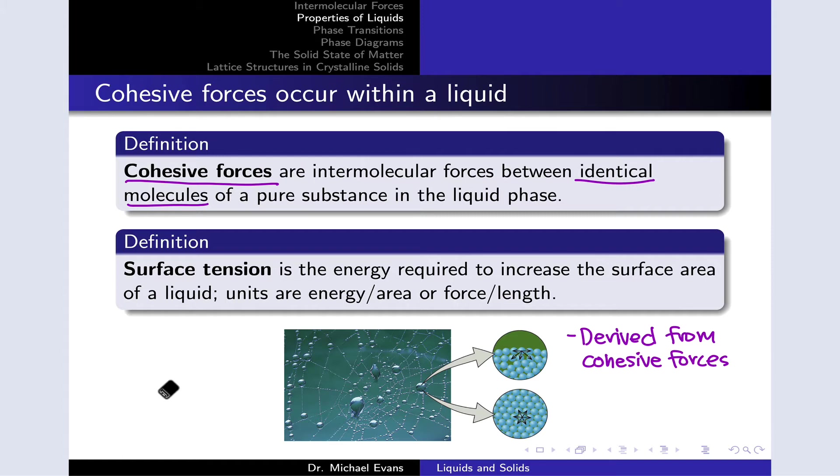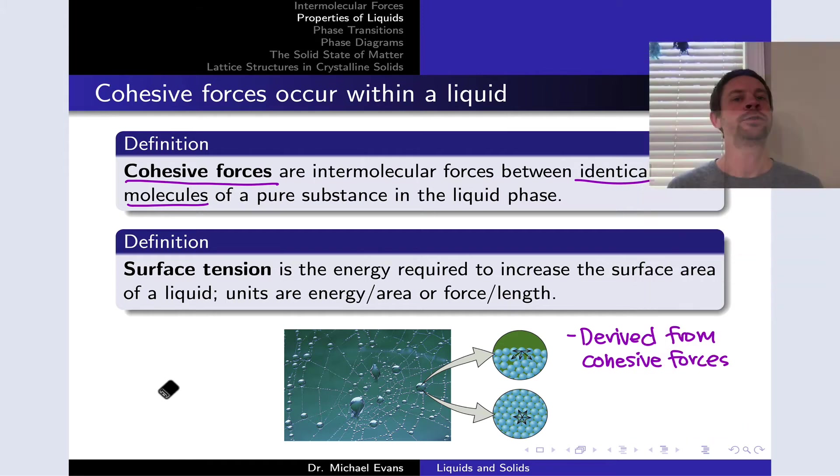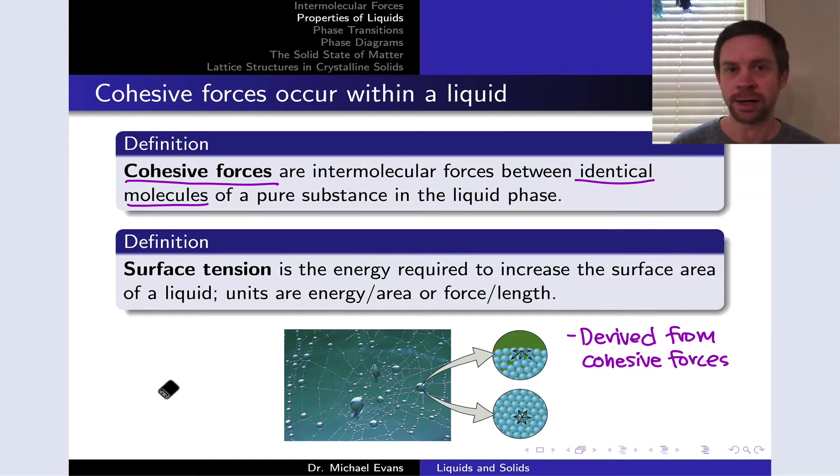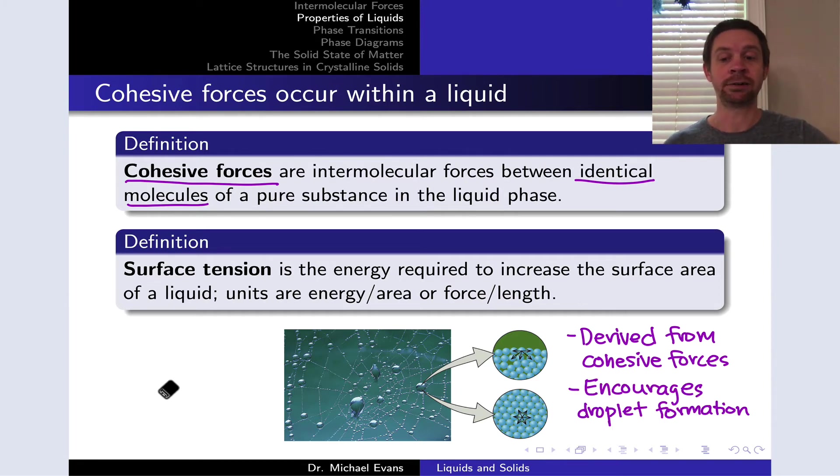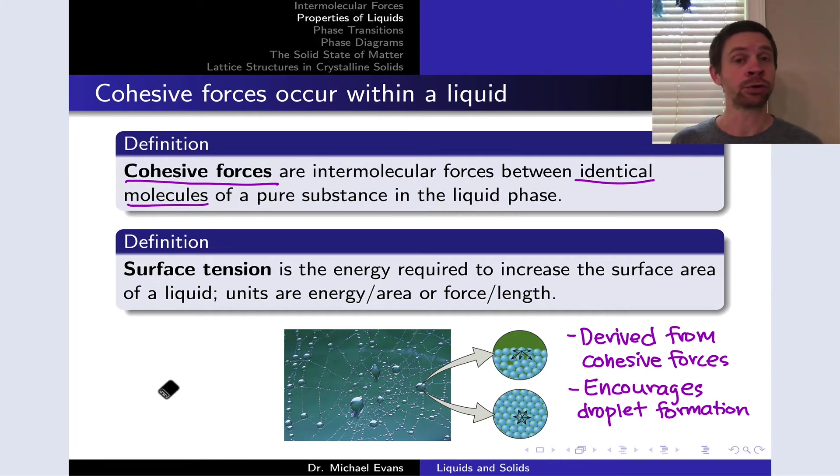Surface tension, when it's greater, tends to cause the surface to want to minimize its area, right? Because high surface tension means I've got to put a lot of energy into the liquid in order to expand or enlarge the surface. With that high surface tension, the liquid will tend to want to minimize its energy by minimizing the surface area, and this encourages spherical droplet formation.